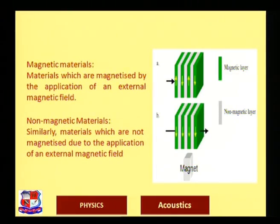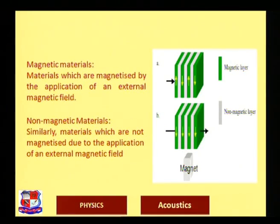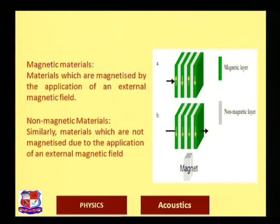Magnetic materials are magnetized by the application of an external magnetic field, while non-magnetic materials are not magnetized by an external magnetic field. In the diagram, in the presence of a magnet (at the bottom), Figure A shows dipole moments aligned in a particular way — that is a magnetic layer. The other figure shows a non-magnetic layer opposing the external magnetic field.